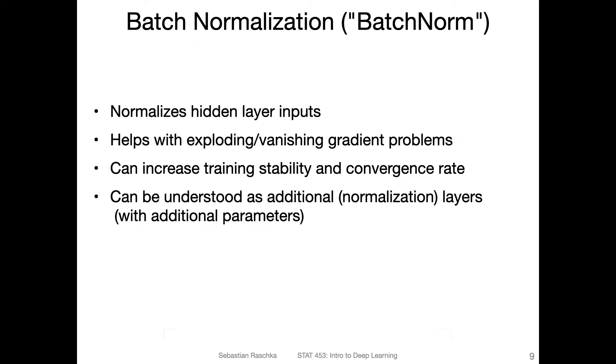So here's the short version of batch normalization. It's about normalizing the hidden layer inputs. So instead of just normalizing the inputs to the network, we normalize also internally the inputs to each hidden layer. And this helps with exploding and vanishing gradient problems, so that the gradients don't become too large or too small.